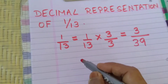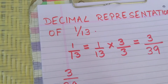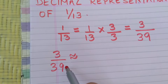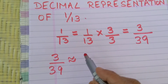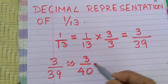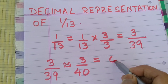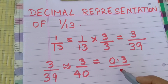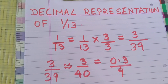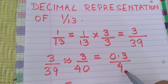So 3 by 39 — what we do is we add 1 here. So this becomes 3 by 40, which is equal to 0.3 by 4. Now we simply divide this by 4.